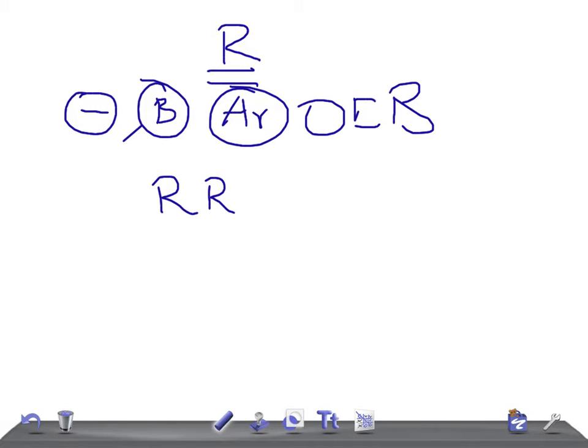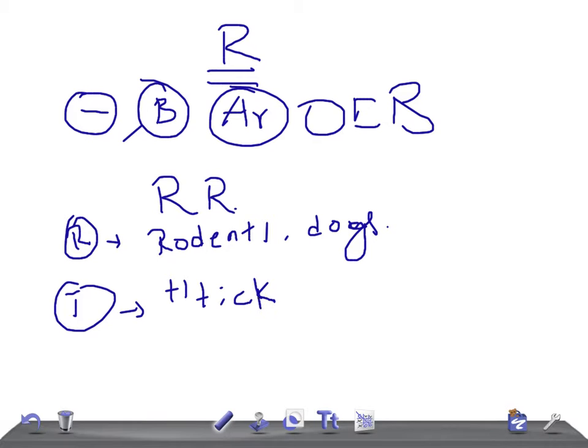What's the reservoir for this? It's really very important you should know. Small wild rodents and large wild and domestic animals, especially dogs. Rodents, small wild rodents and dogs or animals. What's the transmission? How is it transmitted? It's transmitted by a hard tick, Dermacentor. Try to memorize this, this is really very important.